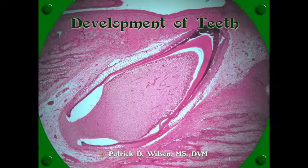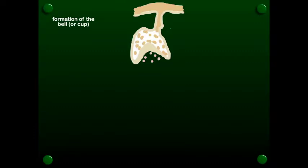This is just a quick little ditty on the development of teeth. In the fetus, we're going to have invagination of the oral epithelium. And as it invaginates, it's going to form a bell if it's on the lower arcade or a cup on the upper arcade.